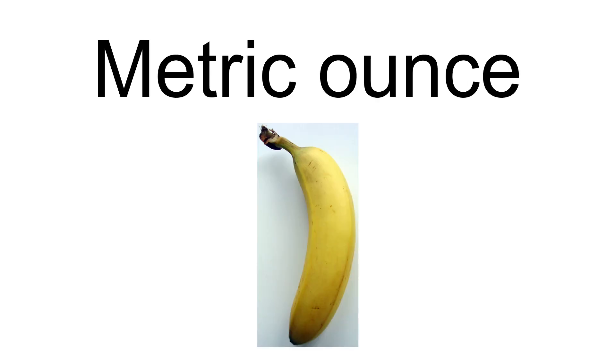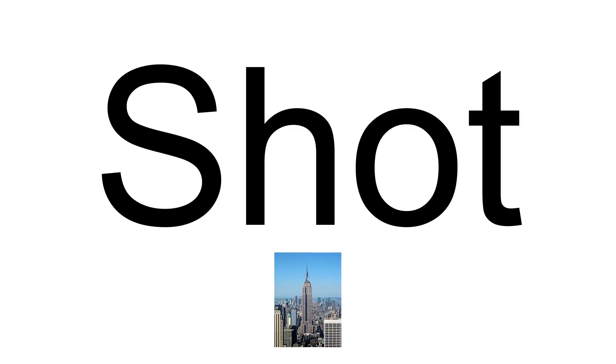A metric ounce is an approximation of the imperial ounce, U.S. dry ounce, or U.S. fluid ounce; these three customary units vary. However, the metric ounce is usually taken as 25 or 30 milliliters when volume is being measured, or grams when mass is being measured. The U.S. Food and Drug Administration defines the food labeling ounce as 30 milliliters, slightly larger than the 29.6 milliliter fluid ounce. The shot is a liquid volume measure that varies from country to country and state to state depending on legislation. The size of a single shot is 20 to 60 milliliters; the smaller pony shot is 20 to 30 milliliters.